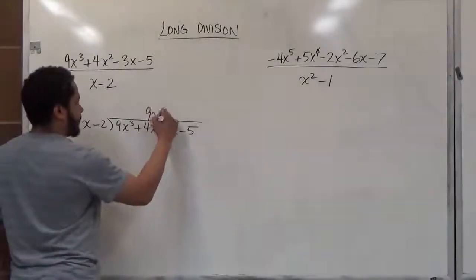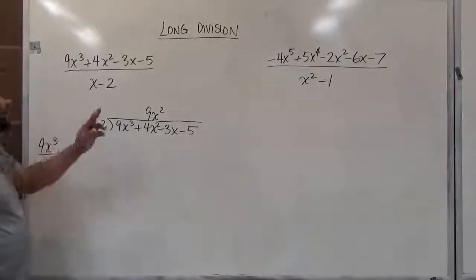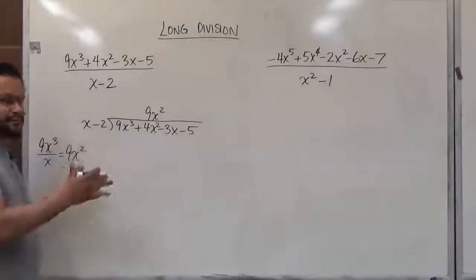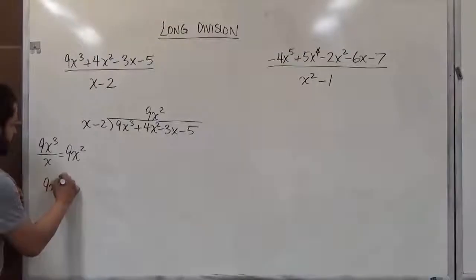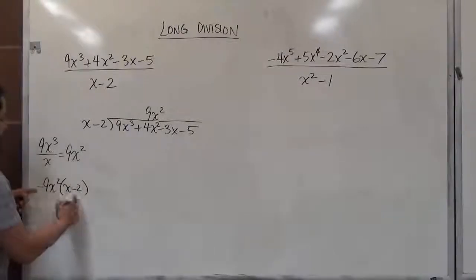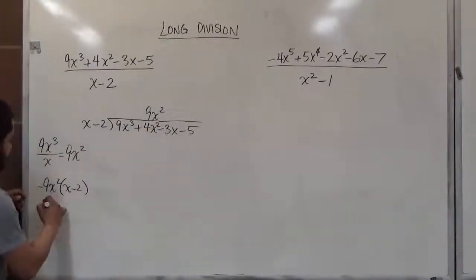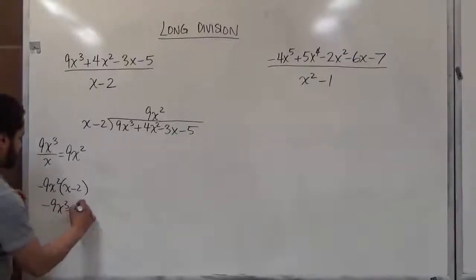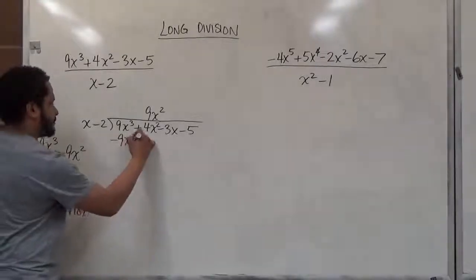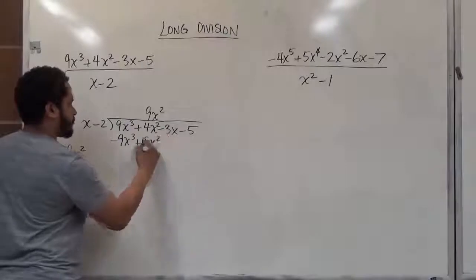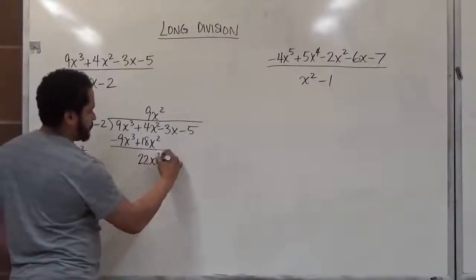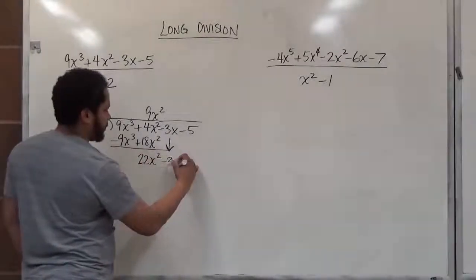We put the 9x squared up top. When we're dividing, we take the product of the quotient and the divisor to create the subtracting term, so we make it the opposite. We have negative 9x squared multiplied by x minus 2, which gives us negative 9x cubed plus 18x squared as our subtractor. The first two terms cancel to 0, the second two give us 22x squared, and we bring down the third term, negative 3x.